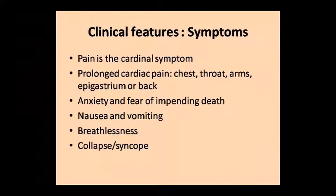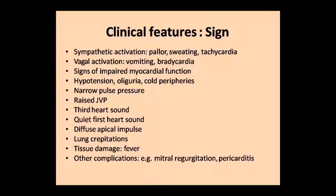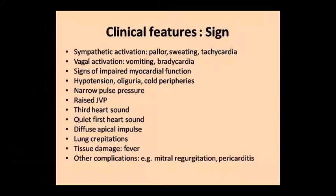Clinical features: the cardinal symptom is prolonged pain in the chest, throat, arm, epigastrium, or back. Anxiety and fear — which can suggest death — nausea, vomiting, collapse, or syncope. Sympathetic activation shows skin changes; vagal activation shows vomiting and bradycardia. Impaired myocardial function: BP changes, narrow pulse pressure, raised JVP, third heart sound, quiet first heart sound, diffuse apical impulse, and lung changes from tissue damage.